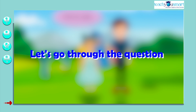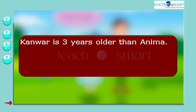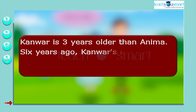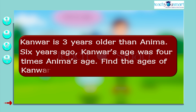Let's go through the question. Kunwa is three years older than Anima. Six years ago, Kunwa's age was four times Anima's age. Find the ages of Kunwa and Anima.